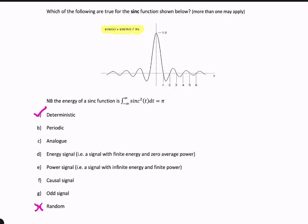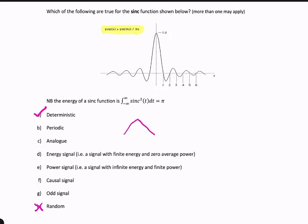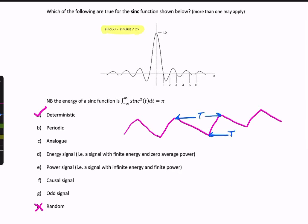The next option is periodic. Does the signal repeat itself? It's true that there are ripples and these ripples are regular in time, but they're not exactly the same — each ripple has a slightly different shape and different amplitude. It is true that there is symmetry, so the right side looks like the left side of the x-axis, but that doesn't make it periodic. A periodic signal has to repeat itself with a fixed time between points of similar phase. So this signal is clearly not periodic.